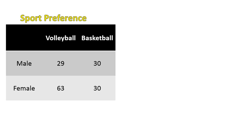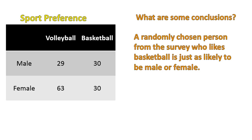Let's look at one more — sports preference: volleyball versus basketball, male and female. These conclusions are more like options you'd have on a Common Core test. One conclusion: a randomly chosen person from the survey who likes basketball is just as likely to be male or female. That means there's the same number of males and females picking basketball — 30 males and 30 females both picked basketball. So if you randomly picked a person who liked basketball, it's just as likely to be male as female.